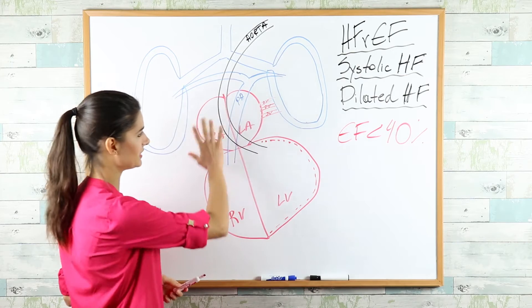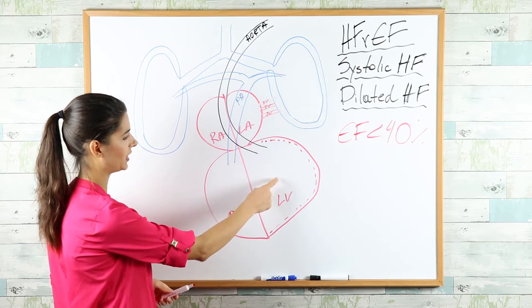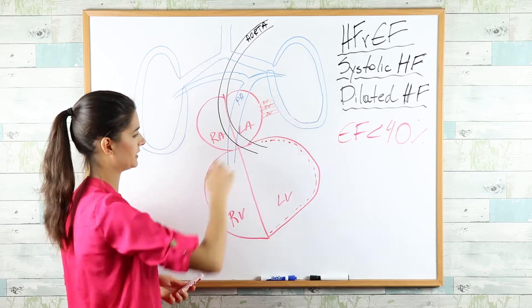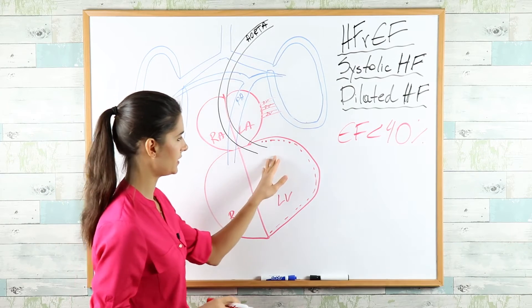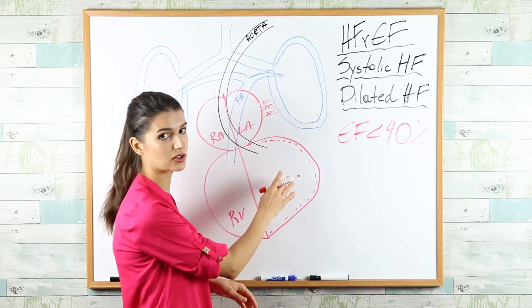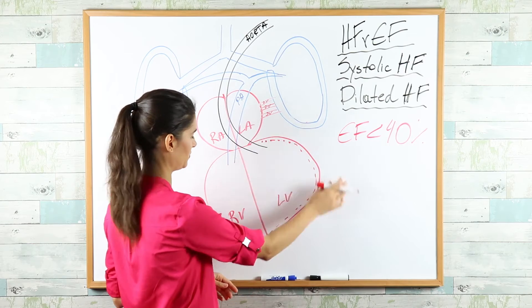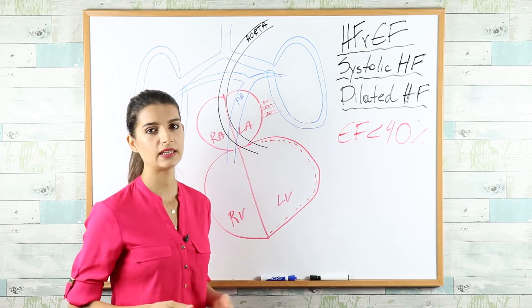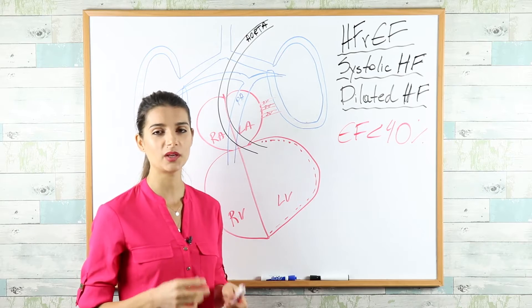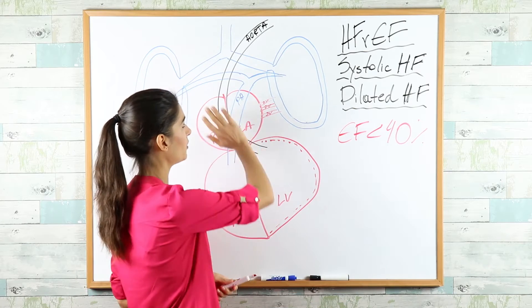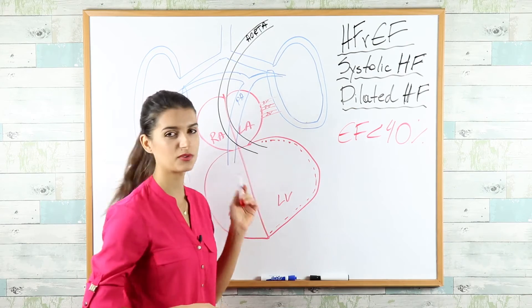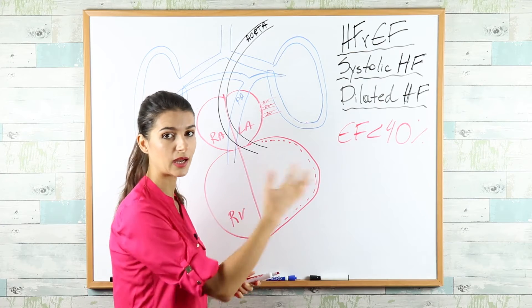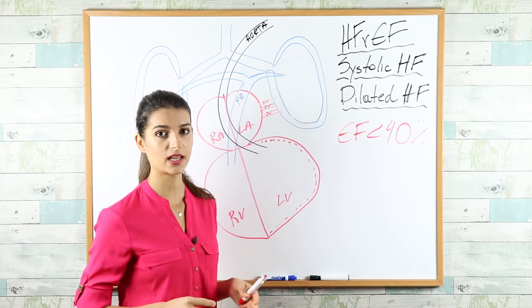Imagine the heart with right ventricle, left ventricle, right atrium, left atrium, and the pulmonary system. In HFrEF, the left ventricle is dilated — much bigger than the right ventricle, stretched. The end effect is that this left ventricle won't be able to push blood forward through the aorta, so blood backs up to the lungs where it's coming from.